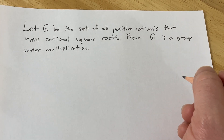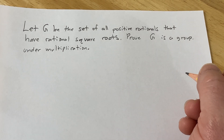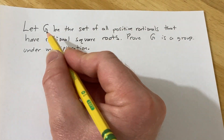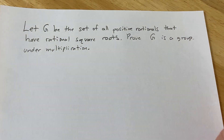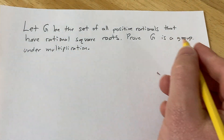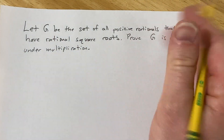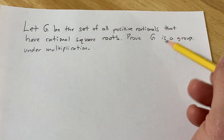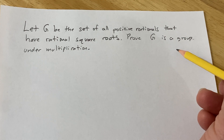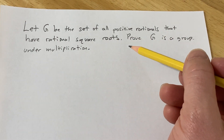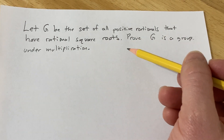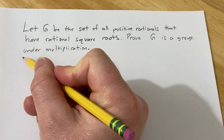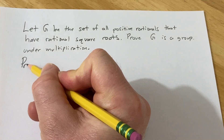In this video, we're going to prove that a set is a group. Let G be the set of all positive rationals that have rational square roots. We want to prove that G is a group under multiplication. So let's go ahead and go through it very carefully.